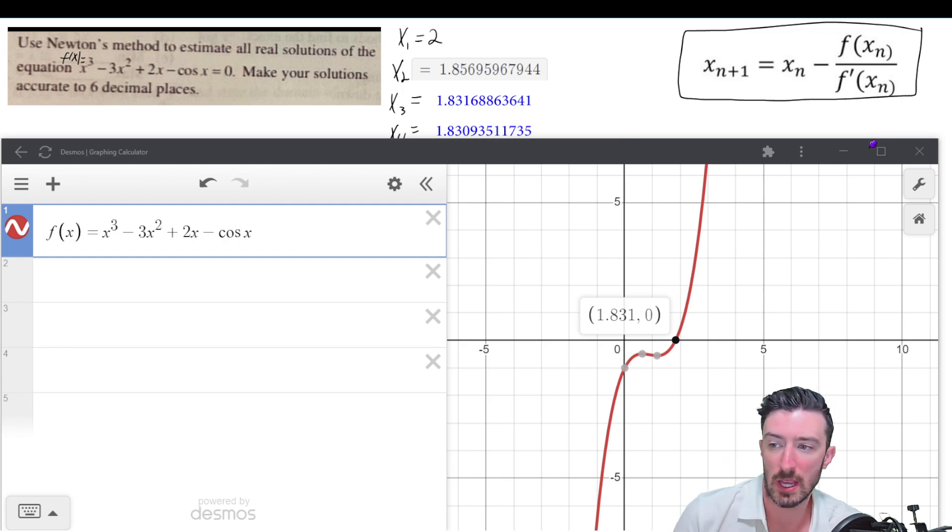In this case, they want us to estimate all solutions to this equation. But I'm going to start by just setting this equal to f(x). And I wrote that in decimal form so we can see our graph and also see where it equals zero. Well, it equals zero at 1.831.